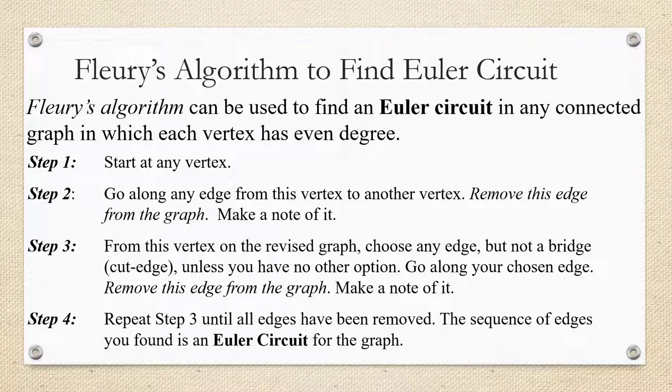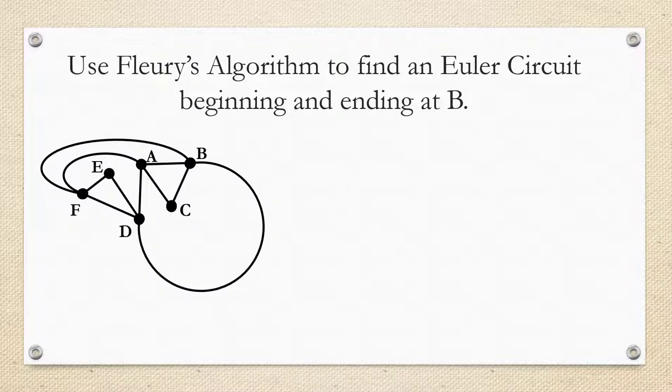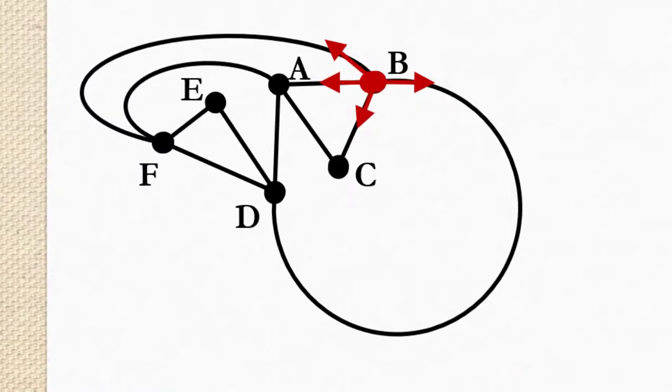Use Fleury's algorithm to find an Euler circuit beginning and ending at B. Remember you can start any vertex you want, but sometimes in the instructions the problem will tell you what vertex they want you to start at. This one's telling us to start at B. Focus in on B and look at all the directions we can go from B. We can go in four different directions. We can go towards A, we can go towards C, we can go towards D, or we can go towards F.